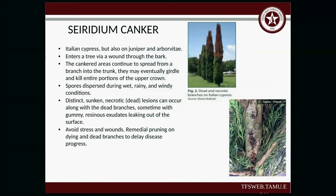Seiridium canker is often seen on Italian cypress, but also on juniper and arborvitae. It enters the tree via wounds through the bark. Cankered areas will continue to spread from the branch to the trunk and eventually girdle and kill the entire upper crown portion of the tree. Spores disperse during wet, rainy, and windy conditions. You'll see distinct sunken necrotic dead lesions along the dead branches, sometimes with gummy resinous material leaking out of the surface — that darker, shiny-brown color. Avoid stress and wounds; remedial pruning of dying and dead branches can delay the disease. The overall theme: minimize stress on your trees so they aren't susceptible to disease.